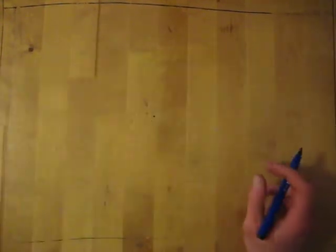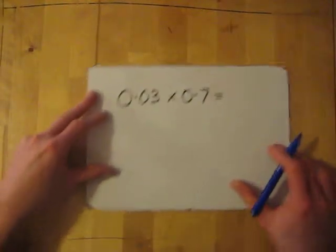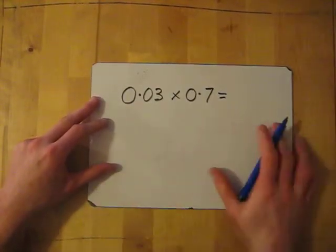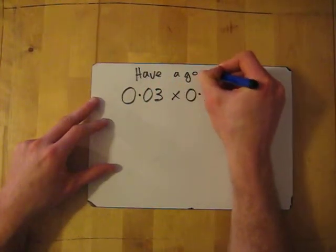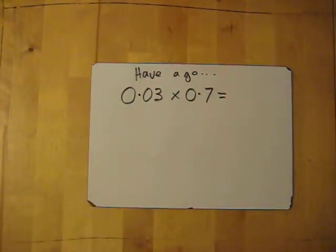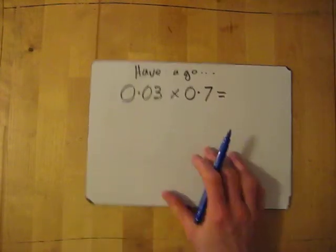Let's try 1 more. This one. Again, exact same thing. Forget about decimals. So this one is a have-a-go. So 0.03 times 0.7.